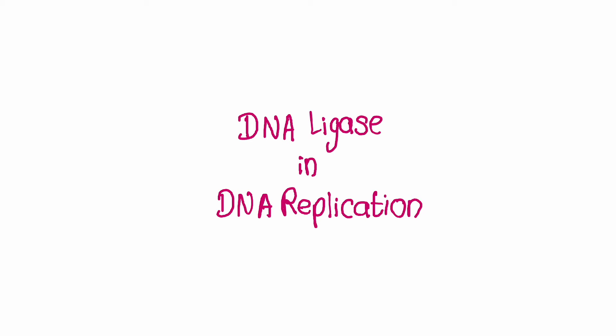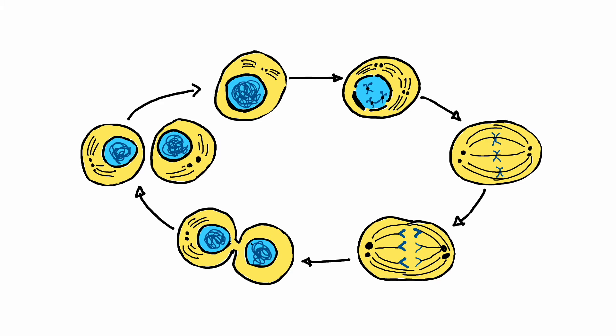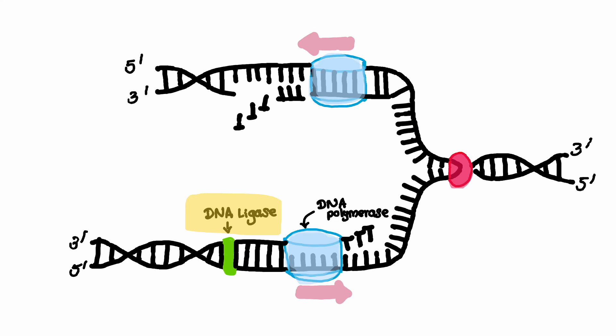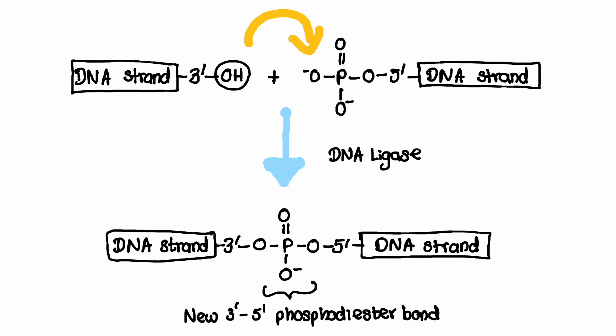DNA ligase takes part in DNA replication. Each time our cell replicates, our DNA needs to be copied perfectly. But sometimes, the replication machinery leaves tiny gaps between DNA strands. This is where DNA ligase comes into play. They facilitate the joining of DNA fragments together by catalyzing the formation of phosphodiester bonds.